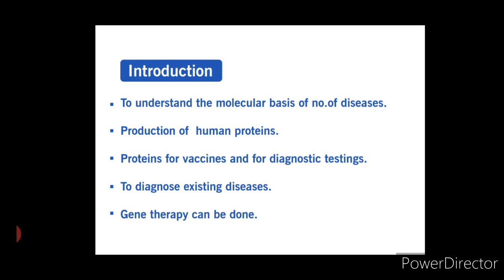Second, human proteins can be produced in abundance for therapy — for example, insulin and growth hormone. Third, proteins for vaccines — for example, hepatitis B — and for diagnostic testing — for example, AIDS test — can be obtained. Fourth, this technology is used to diagnose existing disease and predict the risk of developing a given disease.